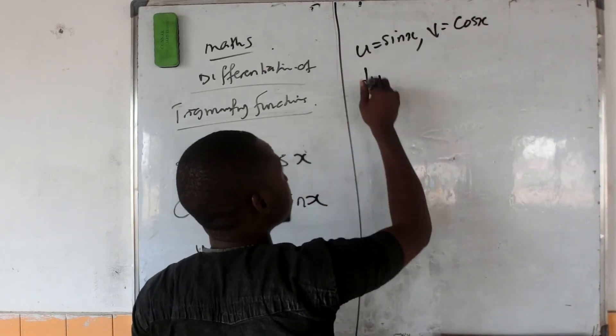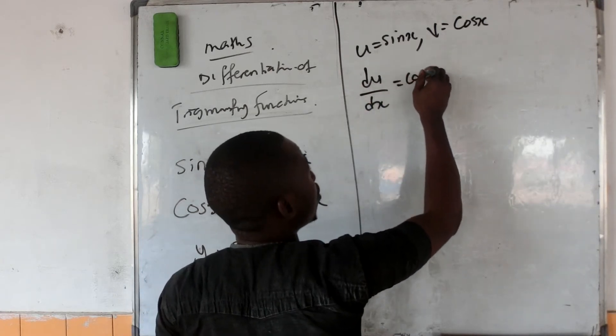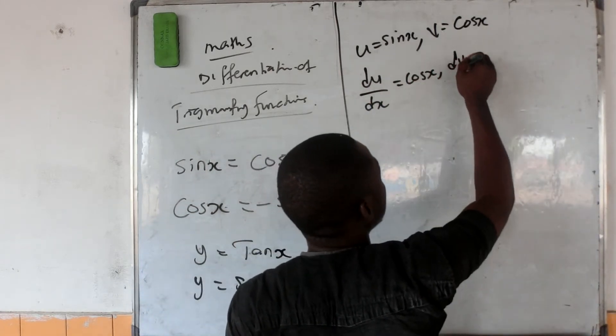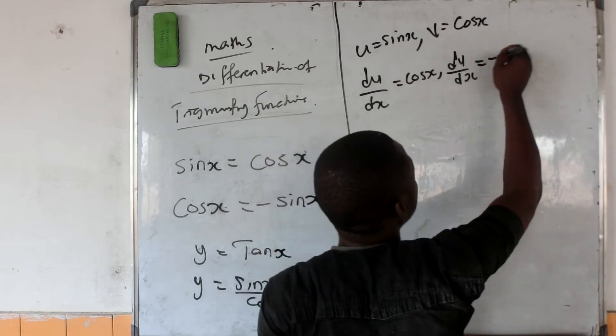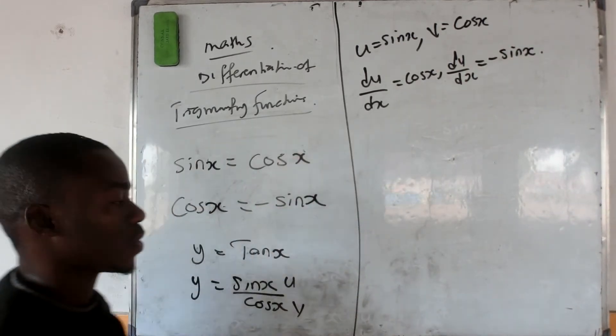So what we will do is we will differentiate this as du/dx equal to cos x and this one is dv/dx equal to minus sin x.